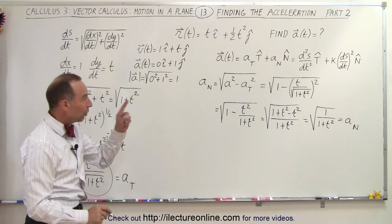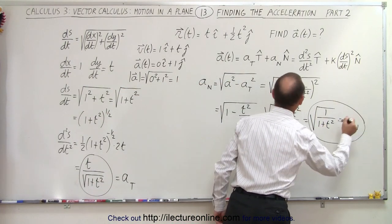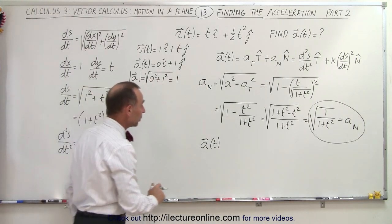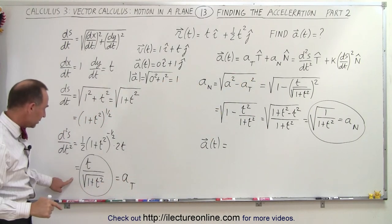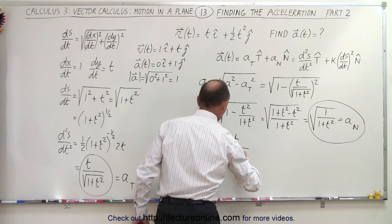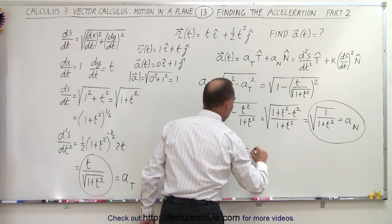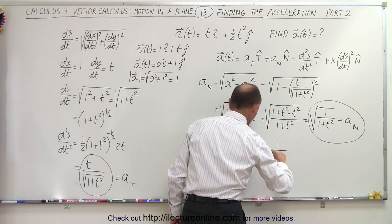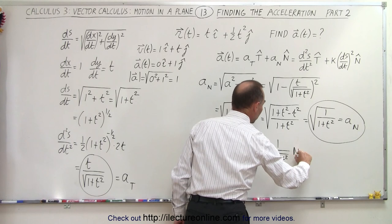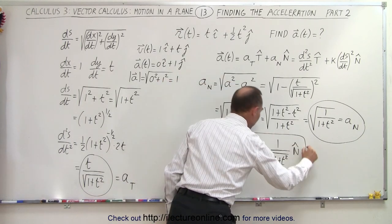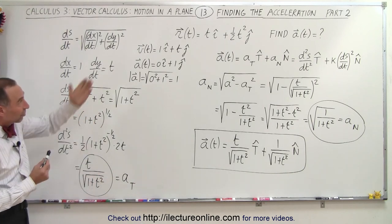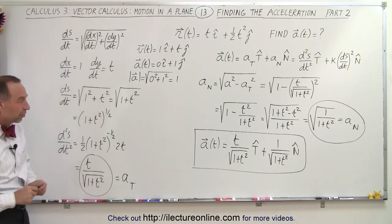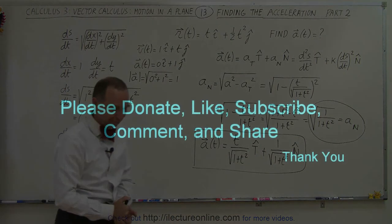So we have the tangential component and the normal component. We simply plug them into our equation. The acceleration vector, in terms of the tangential and normal components, is equal to a_t, which is t divided by the square root of 1 plus t squared, times the unit tangent vector, plus 1 over the square root of 1 plus t squared, times the unit normal vector. And here we have the acceleration vector based on that position vector, not in terms of x and y components like in the previous video, but in terms of the tangential and normal components. And that's how it's done. Thank you.